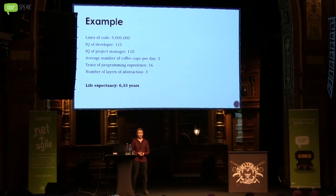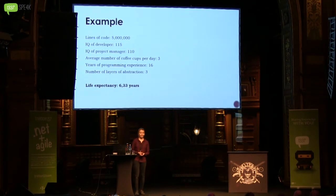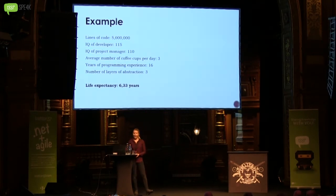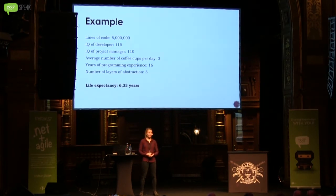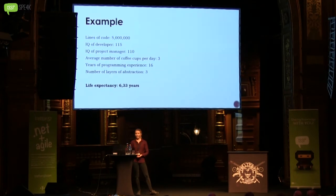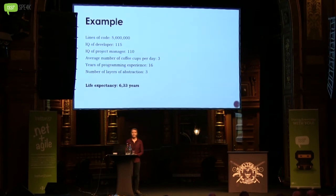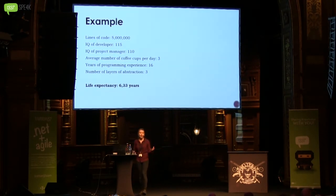So we want to improve this life expectancy. What do we do? More coffee? Less code? Well, I would start out by increasing the IQ of the developer — try replacing the developer with another one, see what happens. Let's increase the IQ to 140 — the number of years increases to seven, but that didn't really make a large difference. But if we double the number of coffee cups, it increases to nine years. So we all have to drink more coffee. And, as I said, this is properly researched — this is not something I just made up.